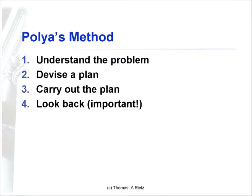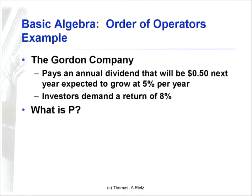Let's do an example of Polya's method using the Gordon Growth Model. Suppose this is an exam question: the Gordon company pays an annual dividend of 50 cents next year, expected to grow at 5% per year, and investors demand an 8% return. What's the price? The first thing we should do is write down what we know: dividend D1 is 50 cents next year, growth rate is 5%, investors demand a return R of 8%. What we're after is the price today.